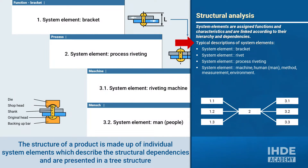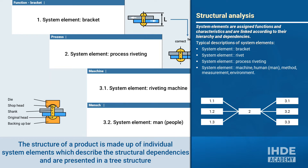Typical system elements for our example would be the bracket, the rivet, the riveting process, and the 5M: machine, human, method, measurement, and environment. These system elements can be linked together and displayed graphically in a structure tree, as shown schematically here. In the middle is the system element 'riveting process'; to the left is the system element 'bracket'; and on the right are the 5M. These structure trees can become very complex, so suitable software is usually used.